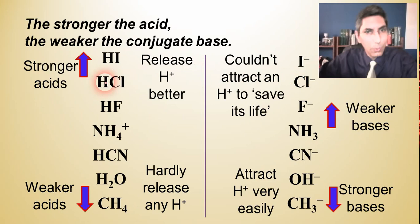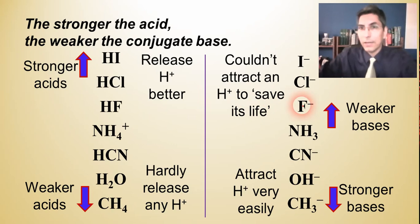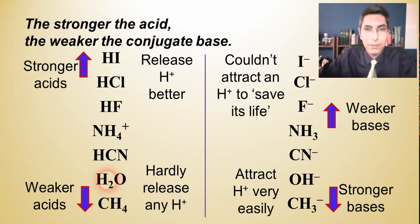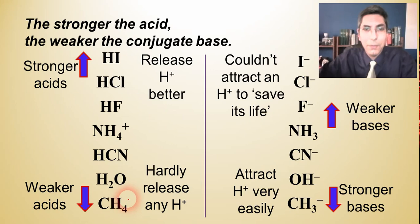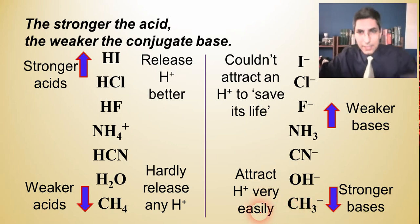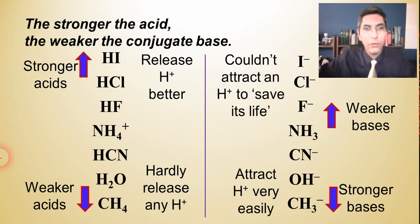As we get to weaker acids like HF, its conjugate base F⁻ is a little bit stronger and is able to attract H⁺ better. Going further down to weak acids like HCN and water — since water is a weak acid, its conjugate base, hydroxide, is actually quite strong and attracts H⁺ very easily. And something as extremely weak as CH₄ has a conjugate base, CH₃⁻, that is a very strong base.